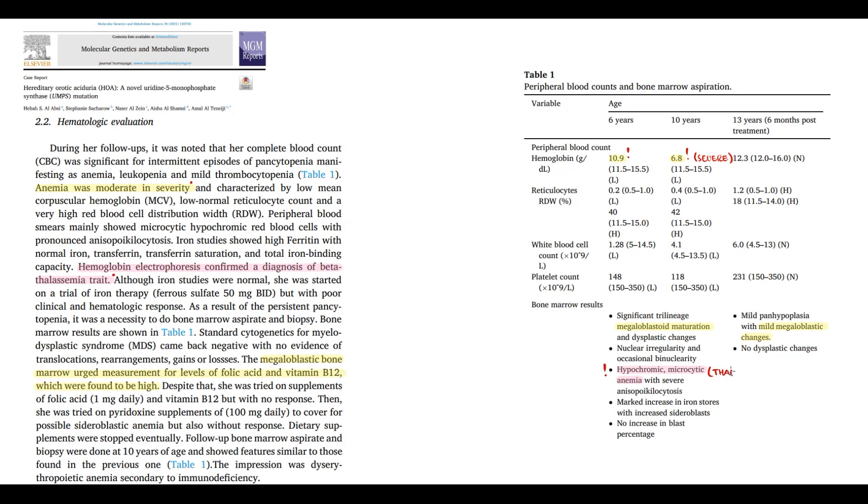And we can see that some features are caused by thalassemia. For example, on bone marrow, they found hypochromic microcytic anemia, and it is the signature feature of thalassemia. But in addition to this, she has megaloblastic bone marrow, which is atypical for thalassemia. And we know that megaloblastic hematopoiesis or megaloblastic anemia is most commonly caused by folate deficiency or B12 deficiency. But in her case, folate and B12 levels were normal.